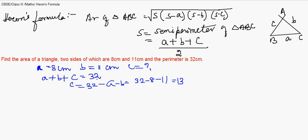So we got C as 13. We apply now the formula to find the area of triangle ABC. We also need to find S. S is given by (A+B+C)/2, that means it is perimeter by 2, that is 32. So it is 32/2, that is 16.